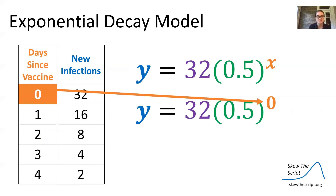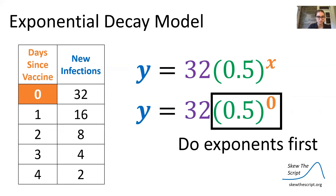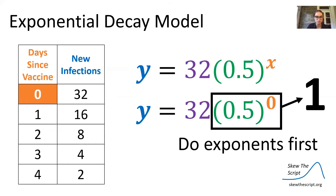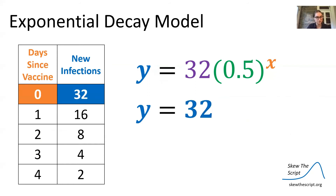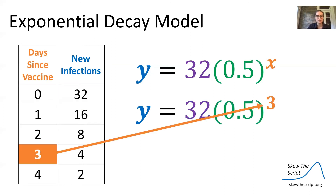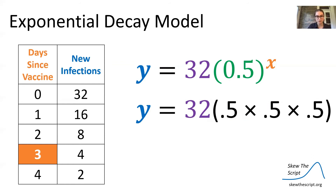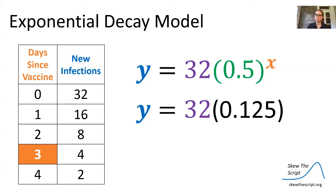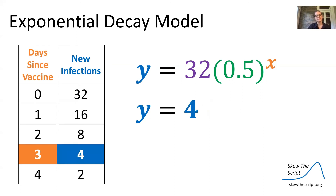Let's plug in a few values to verify. When x = 0, using PEMDAS we get 32 times 0.5 to the zero power, which equals 32 times 1 = 32 — matching our table. For day three, y = 32 times 0.5 to the third power. 0.5 to the third power is 0.5 × 0.5 × 0.5 = 0.125, and 32 times 0.125 equals four — which matches our new infections table.